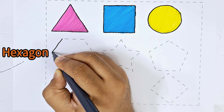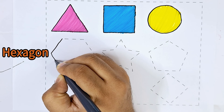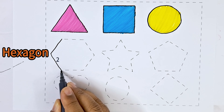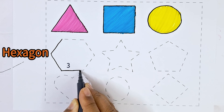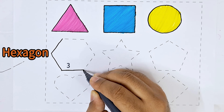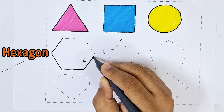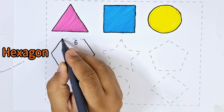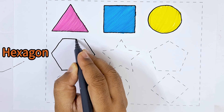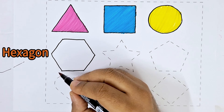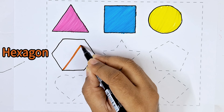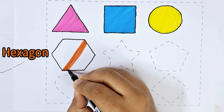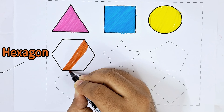This one is a hexagon. It has six sides: one, two, three, four, five, six. And this is a brown color.